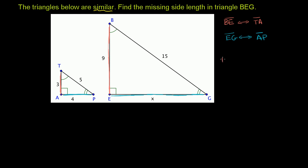The ratio between segment BE and segment TA has to be equal to the ratio between segment EG and segment AP.